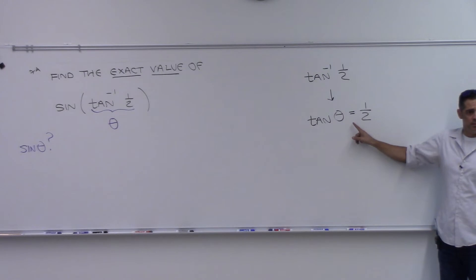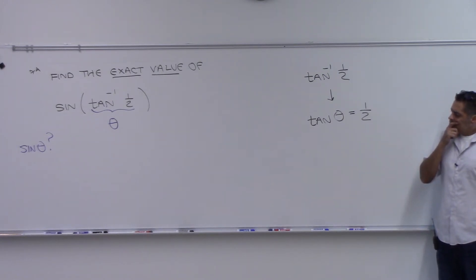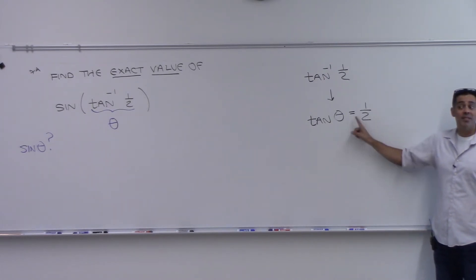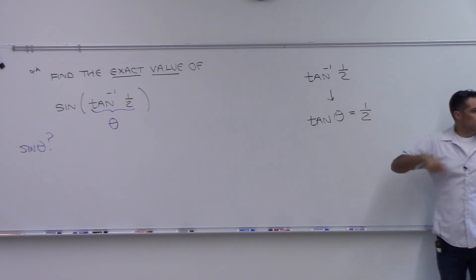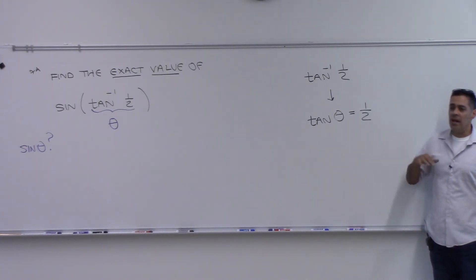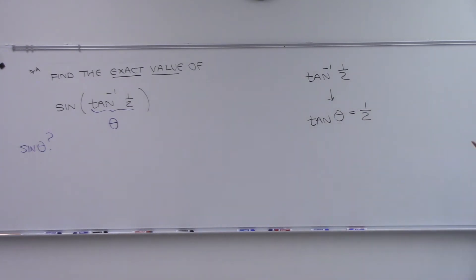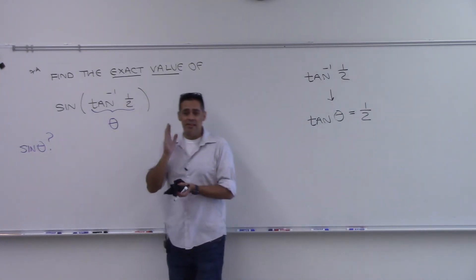On the unit circle, do you recognize 1/2 for tangent? If it were sine of θ equals 1/2, we'd recognize the y-coordinate being 1/2. But tangent has never been 1/2 on the unit circle. So you really want to use your calculator right now — but you're not allowed to. We're supposed to find the exact value.